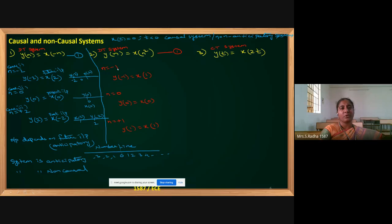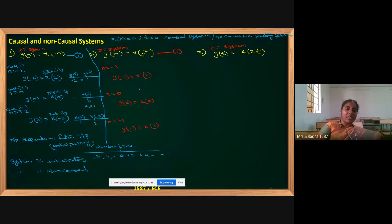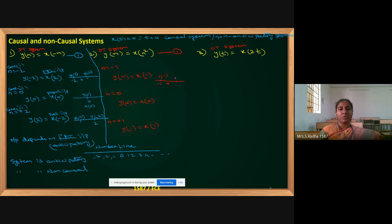Rewrite the equation. When you put n = -1, the equation becomes y[-1] = x[+1]. If we take a number line, we are sitting at -1, calculating output at that point. x[+1] means the input is a future input. Since at least one time the future comes in, the system is anticipatory — a non-causal system.